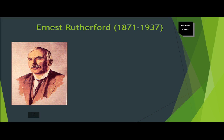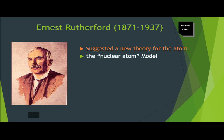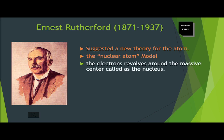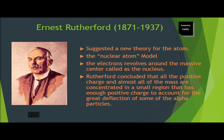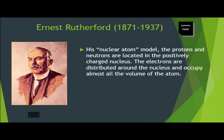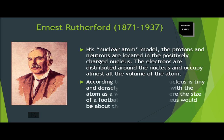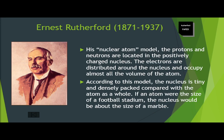Based on these results, Rutherford suggested a new model called the nuclear atom model, where electrons revolve around the massive center called the nucleus. He concluded that all positive charge and almost all of the mass are concentrated in a small region. In this model, protons and neutrons are located in the positively charged nucleus, while electrons are distributed around the nucleus and occupy almost all the volume of the atom.